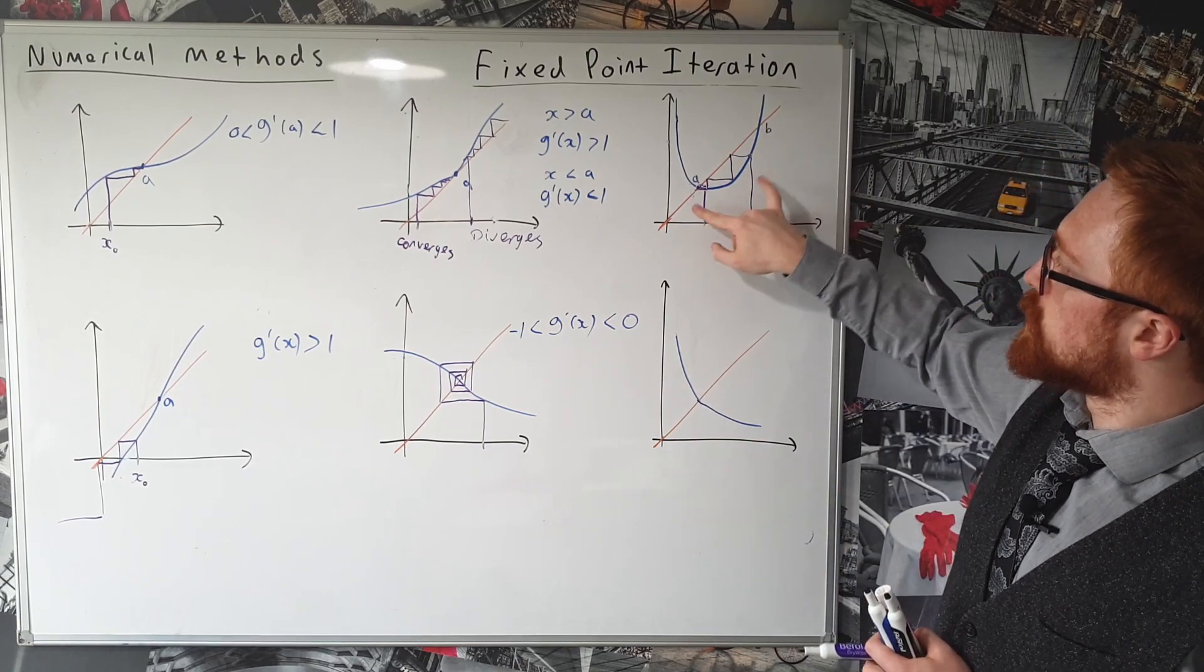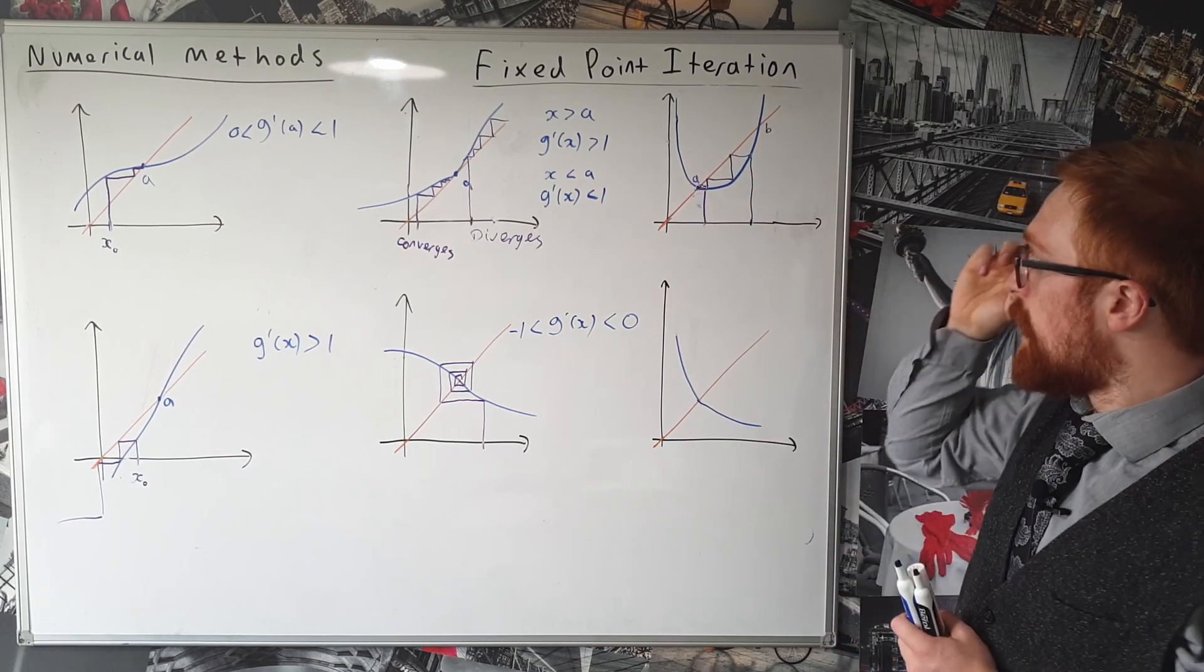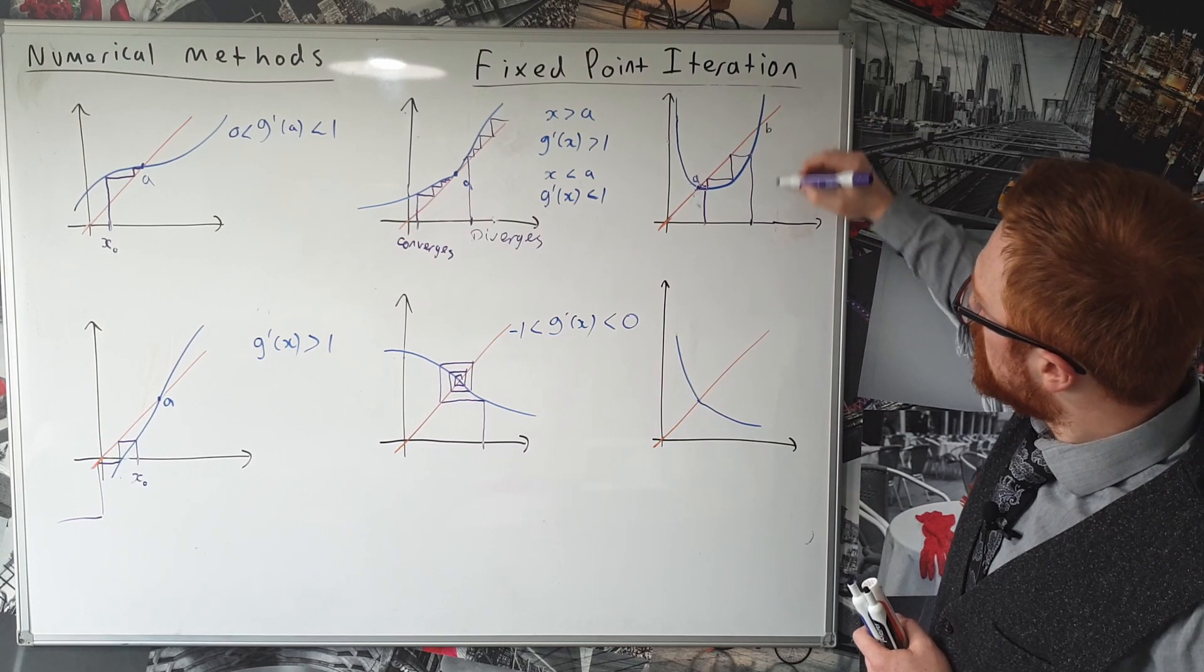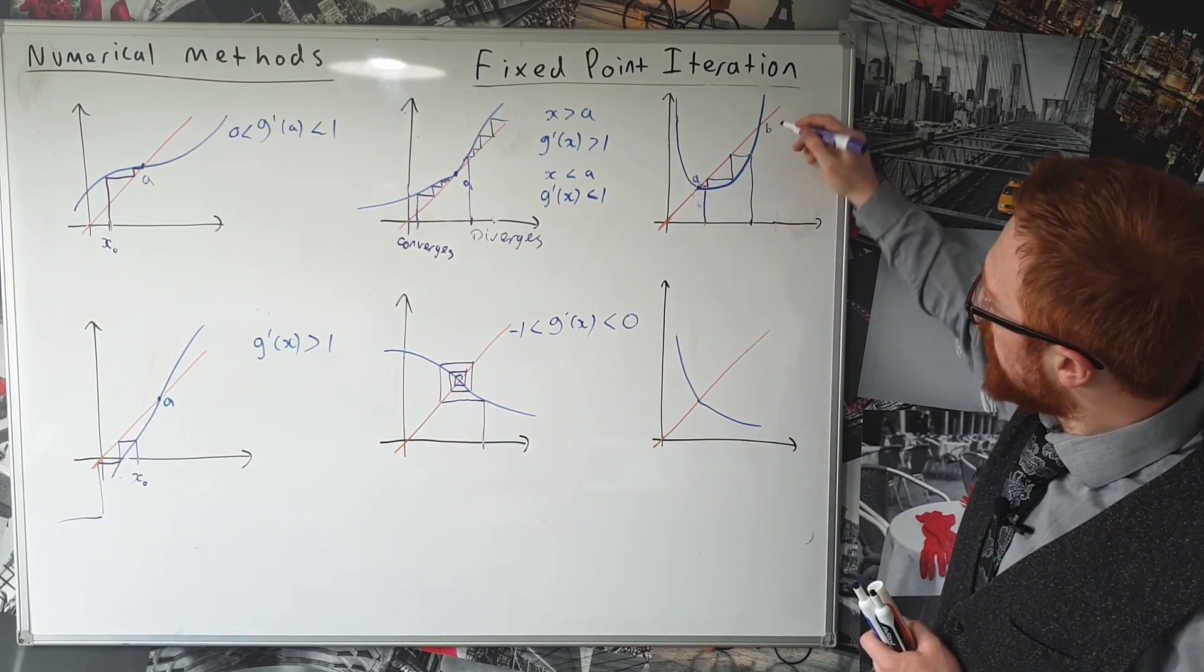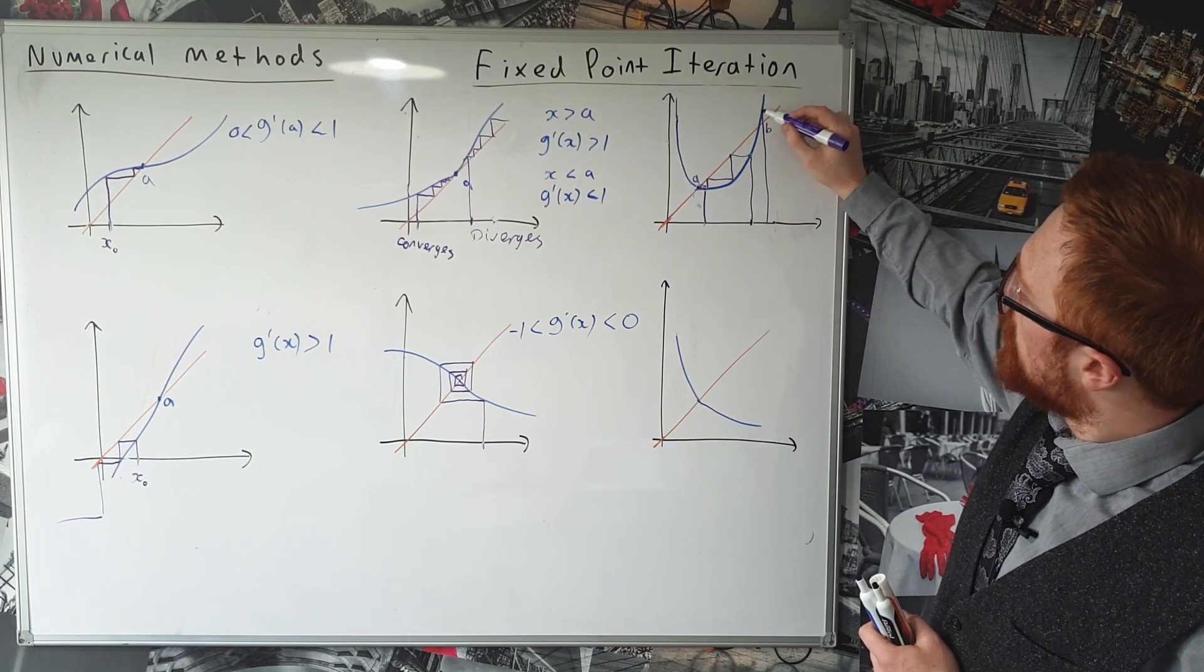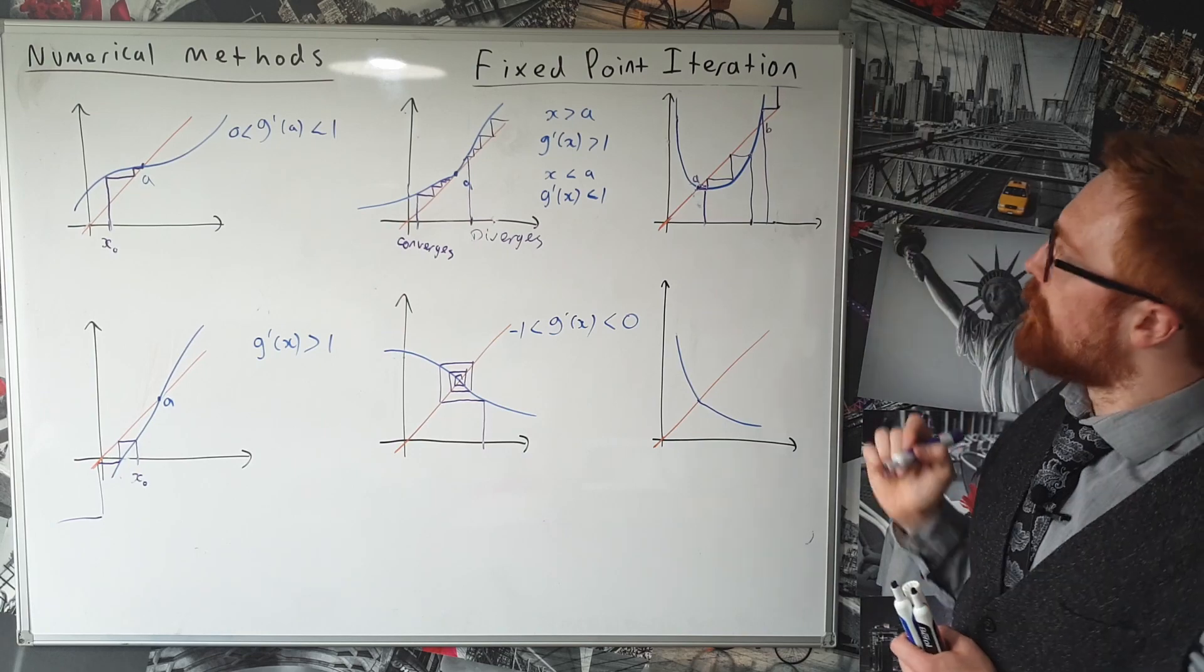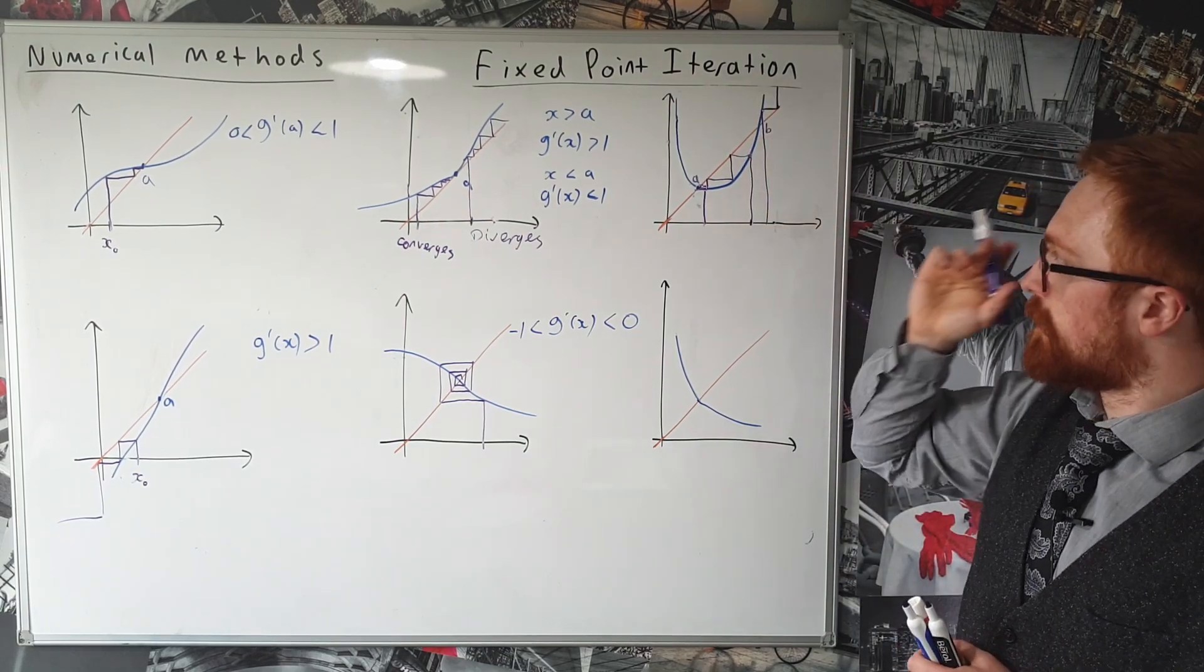So anywhere in between these two solutions, it looks like it's going to converge to A. Let's try one more. Let's try one up here. So if I start to the right of B, if I start here, where we hit the curve, and then we go to the line this way, and we're going to diverge. So anywhere to the right of B, we're going to diverge.